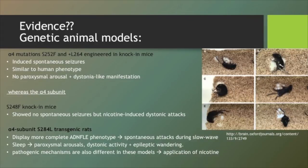Pathogenic mechanisms are also different in these models. Upon application of nicotine, GABA inhibition is increased in the frontal cortex of S252F and L264 knockin mice, whereas it is reduced in the somatosensory cortex of S284L transgenic rats.